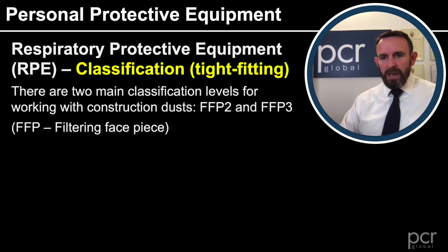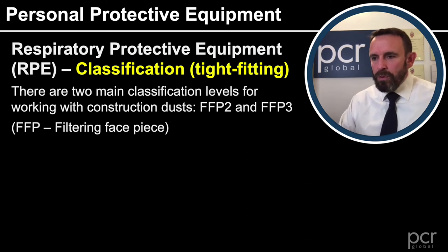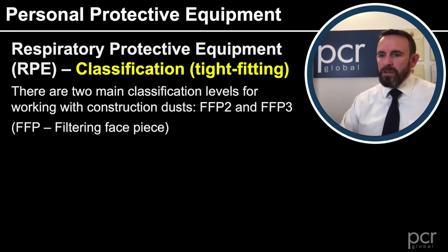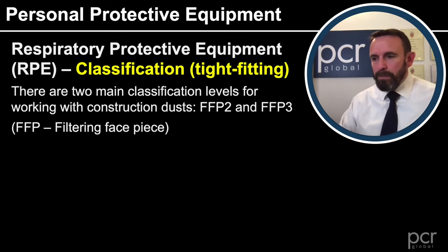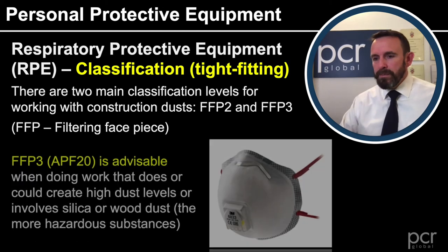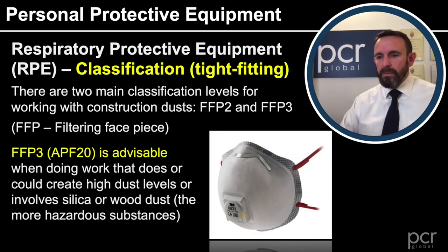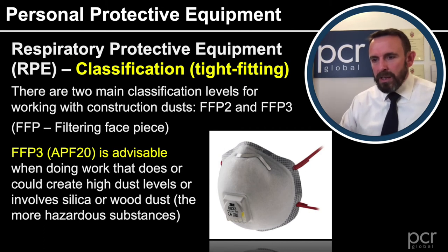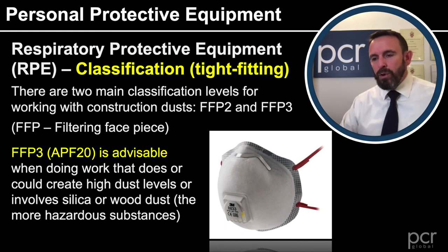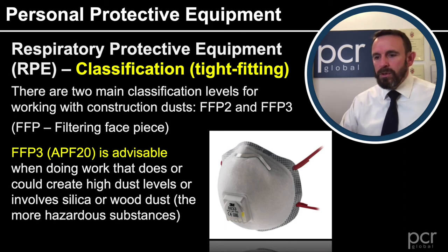Looking at some classifications generally used on-site: two main classifications when working with construction dusts are FFP2 and FFP3. FFP stands for filtering face-piece. FFP3, with an assigned protection factor of 20, is advisable when doing work that does or could create high dust levels, or involve silica or wood dust, because these are the more hazardous substances.